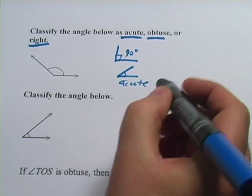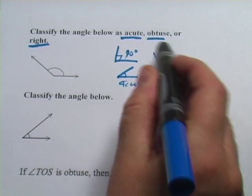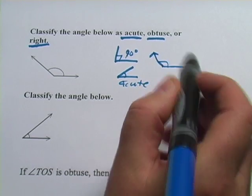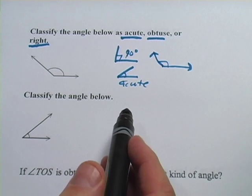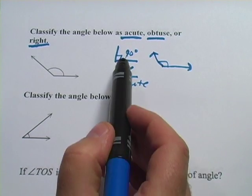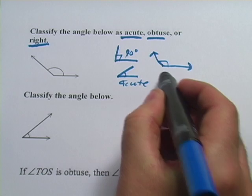And then the wider than 90-degree angles, that would be obtuse. So right angle, acute, and obtuse.